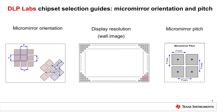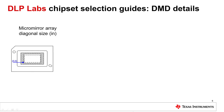The micromirror pitch is the distance between two micromirrors measured from the center of one micromirror to the center of another micromirror vertically or horizontally, in micrometers. The micromirror array diagonal size is the size of the micromirror array measured diagonally in inches. Depending on the DMD, the diagonal size varies between 0.2 inch and 0.66 inch. The DMD part number incorporates the array diagonal — for example, the 0.66 inch diagonal size DMD has the part number DLP660TE.